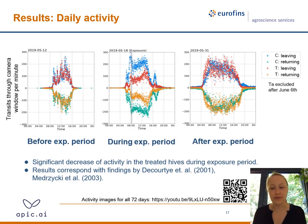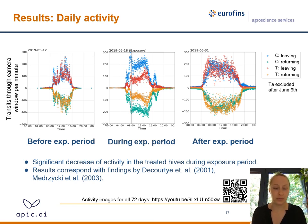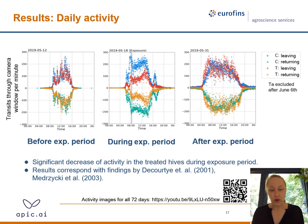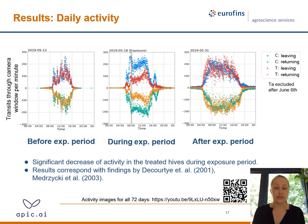We derived the activity of the bees from the number of transits through the field of view of the camera. Three graphs show three different days — before treatment, during treatment, and after treatment — plotting the number of bees entering and leaving per minute. The blue and green dots show the control group; the red and yellow show the treated group. There is a significant decrease in activity in the treated hive during the exposure period, corresponding with previous findings regarding the transitory effect. After the treatment, these effects were no longer significant.